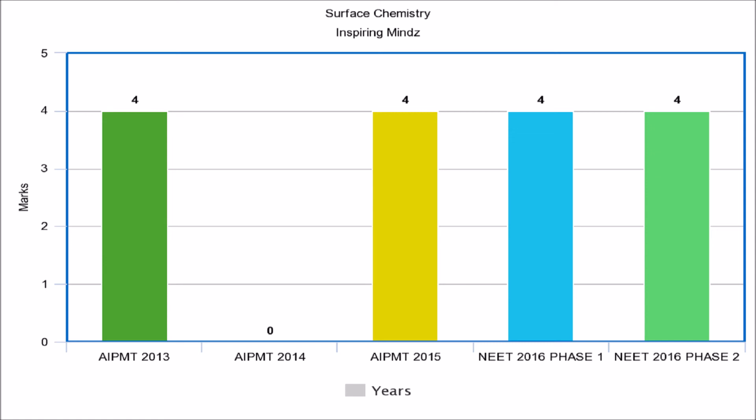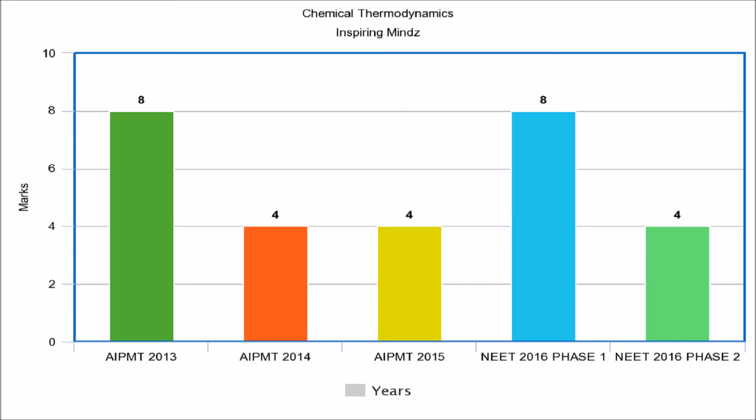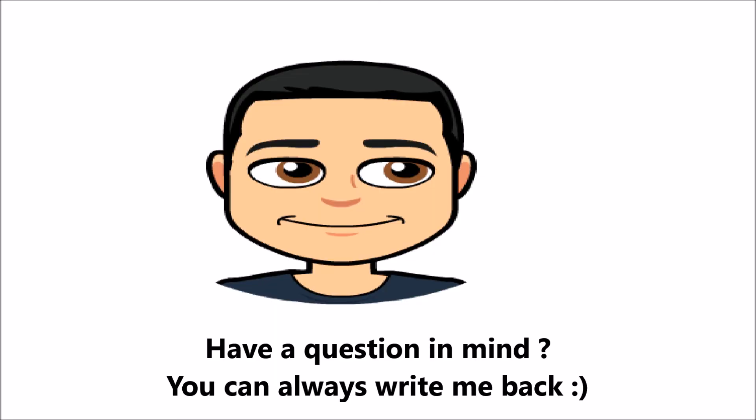The last chapter is chemical thermodynamics, which is both important and easy if studied properly. In AIPMD 2013 and NEET 2016 Phase 1, the weightage was 8 marks, while in AIPMD 2014, AIPMD 2015, and NEET 2016 Phase 2, the weightage was 4 marks. This completes the three-part video series on chemistry weightage for NEET.